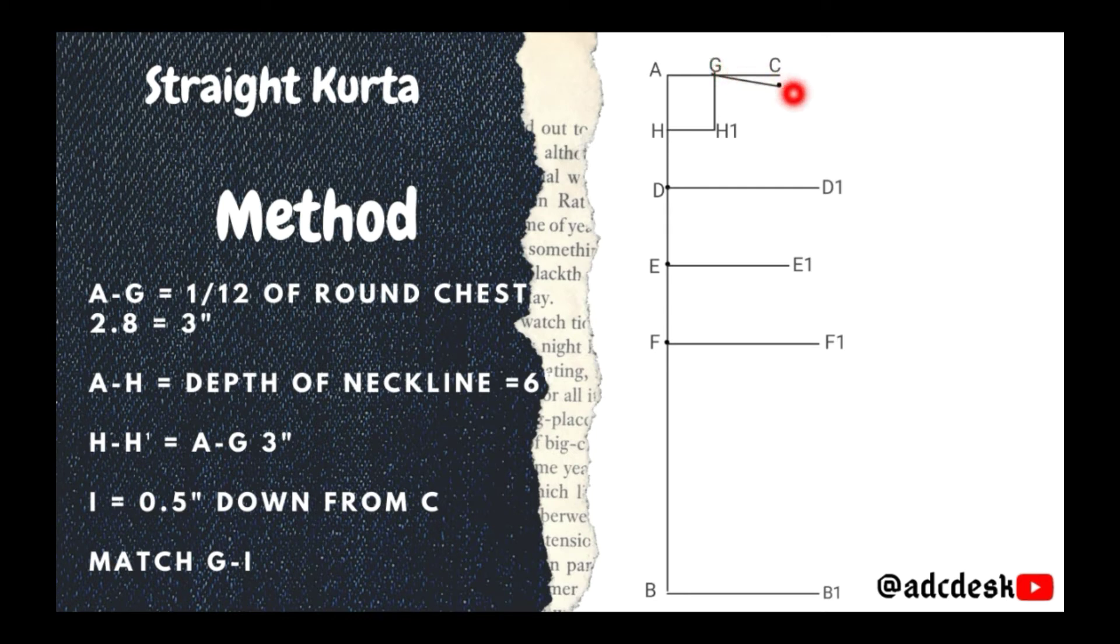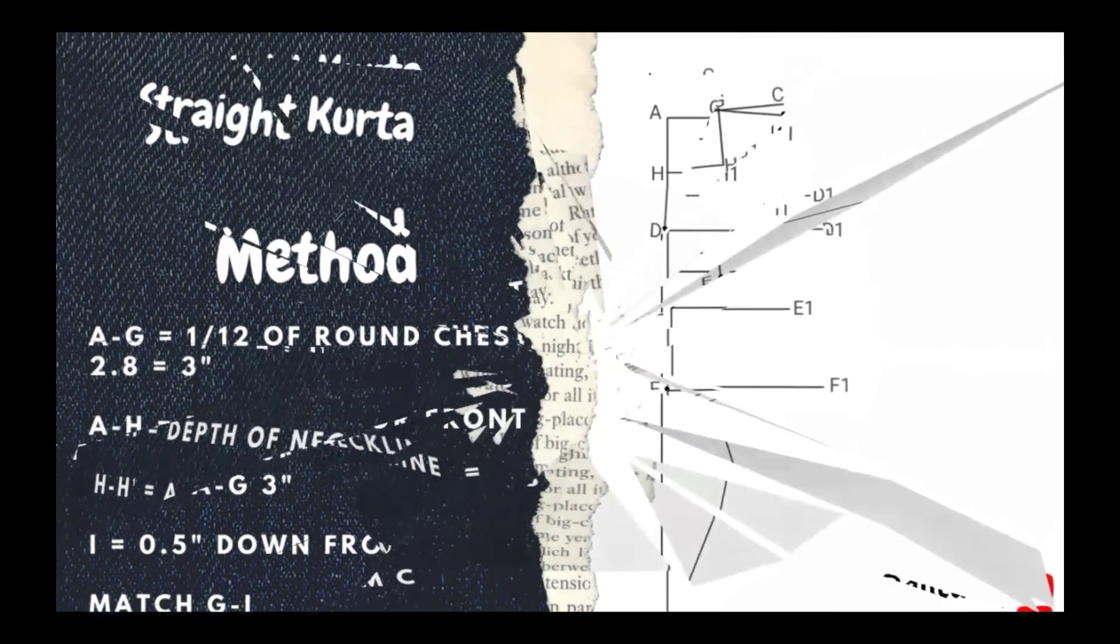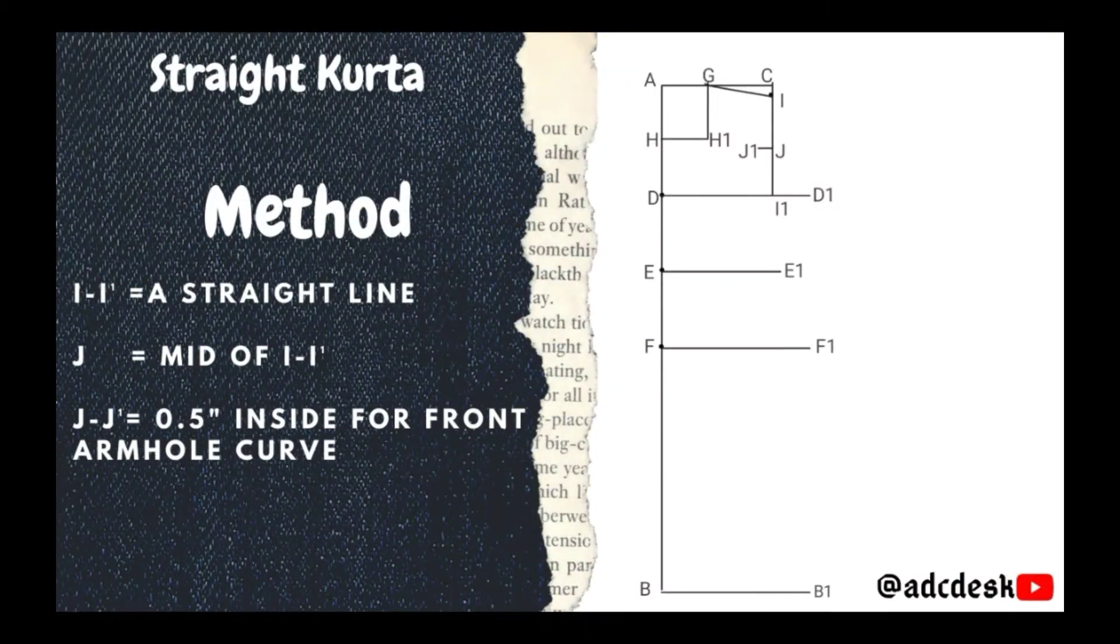Then match G to I. Then I to I1, a straight line. J is mid of I to I1. J to J1, 0.5 inch inside towards the H1 for front armhole, because our front part armhole is slightly tilt as compared to the back one. So we will keep it a little deeper for better fit.